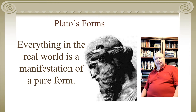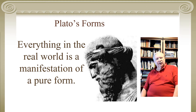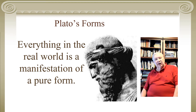Plato develops this idea of form. His forms are based on the assumption that everything in the real world is a manifestation of a pure form in the abstract world. Since nothing is perfect in the empirical world, you have to look to the abstract world for perfection. So everything, according to Plato, has a dualistic existence: an inferior version in reality and a perfect version in the abstract world.